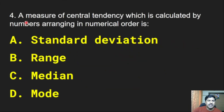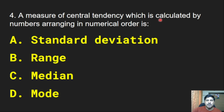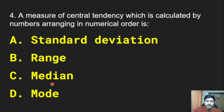Fourth question: A measure of central tendency which is calculated by arranging numbers in numerical order. The options are standard deviation, range, median, and mode. The correct answer is median.